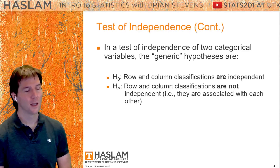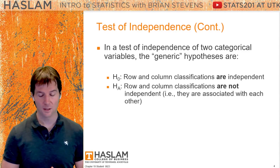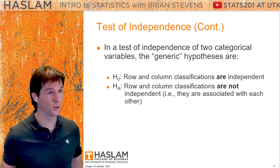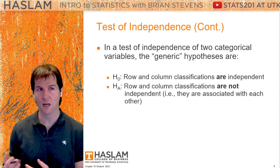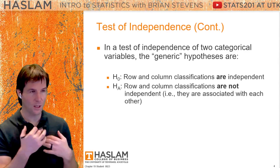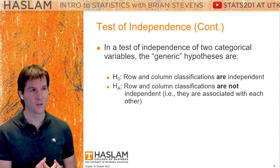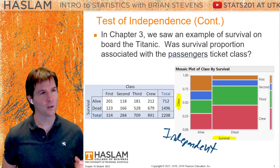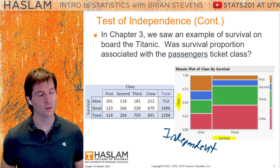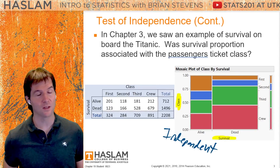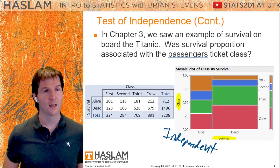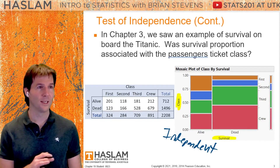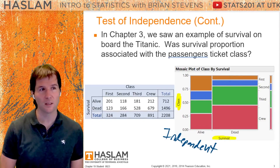The alternative will be: class is not independent of survival. What does that mean? It would mean that your class was associated with your survival, because if it's not independent, class would influence in some way someone surviving the Titanic. At least looking at this, it looks like there's evidence of that — that class is somehow not independent.